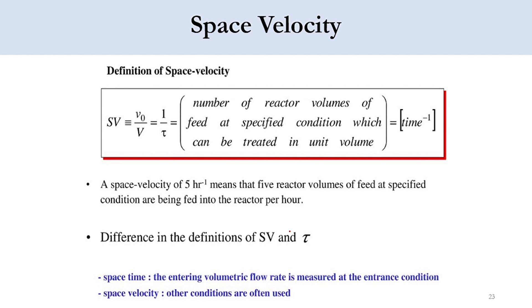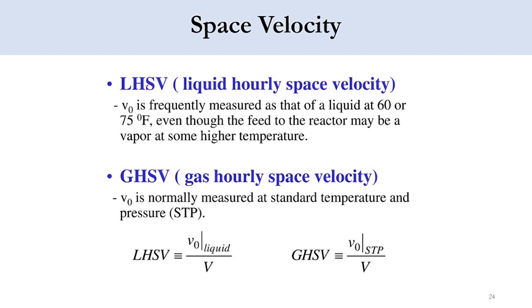We see the difference in space velocity and space time. The space velocity is measured at some different conditions while space time is measured at the entrance conditions. Now space velocity is measured at different conditions. What are these conditions? Liquid hourly space velocity and gas hourly space velocity. For the liquid hourly space velocity, we say that this space velocity is measured as that of the liquid at 60 or 75 degree Fahrenheit, even though the feed may be a vapor at some high temperature. So we will take the standard conditions for that. For gas hourly space velocity, it is measured at standard temperature and pressure, which we say as STP. So V0 of liquid over V is LHSV, liquid hourly space velocity, while GHSV, gas hourly space velocity, is V0 at standard temperature pressure.